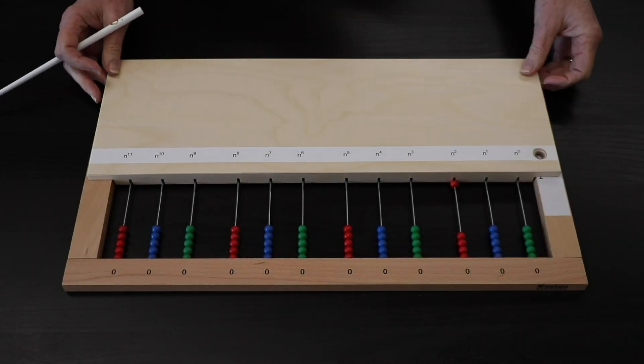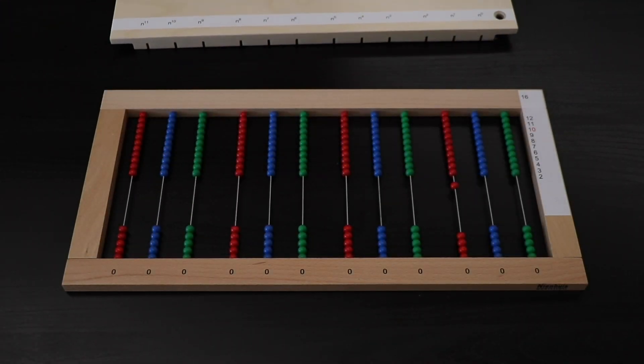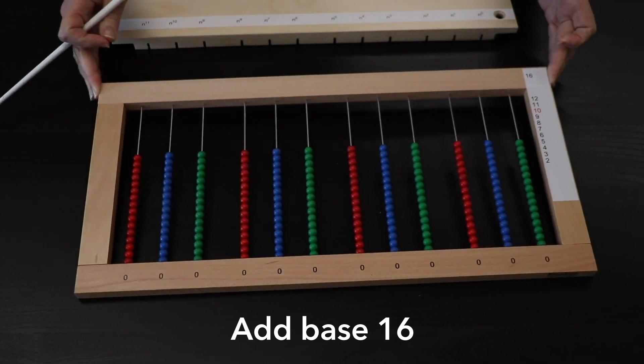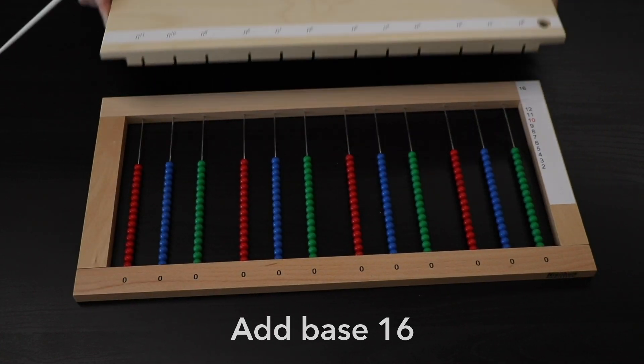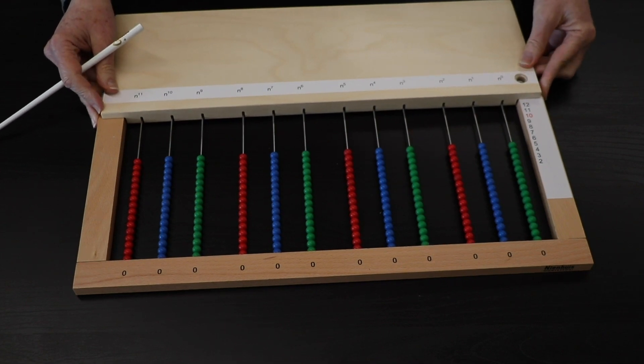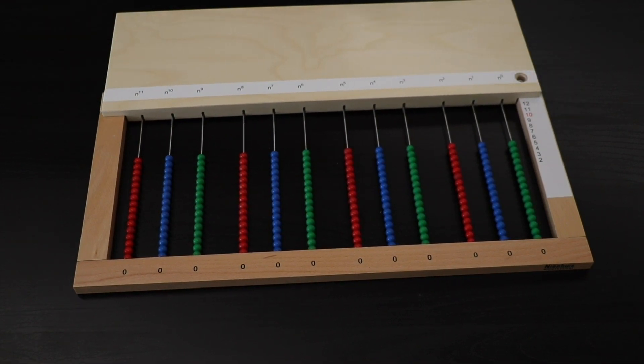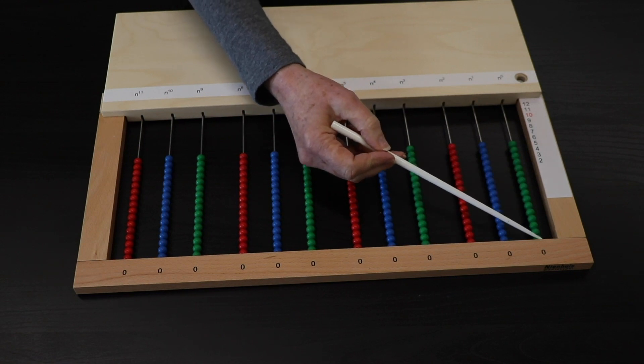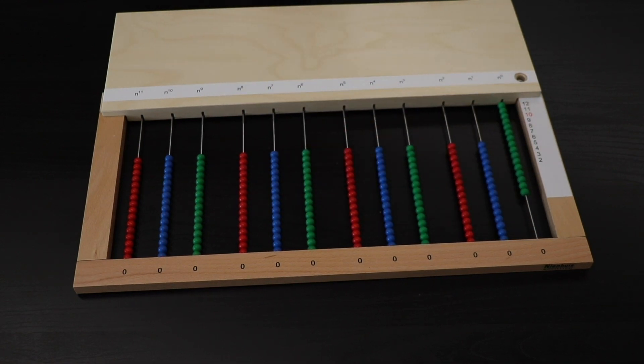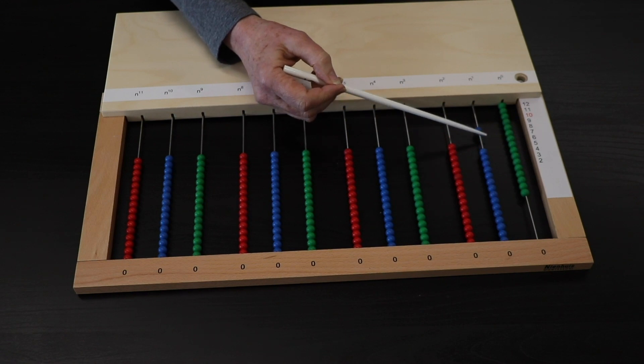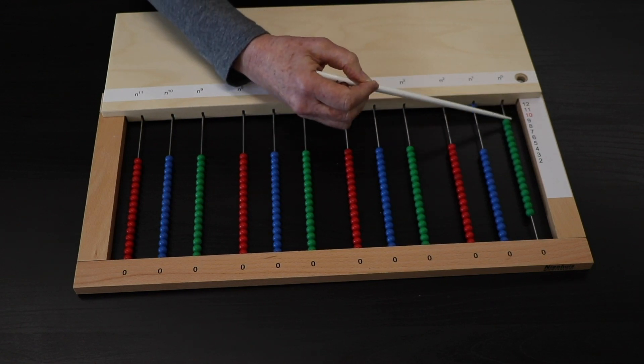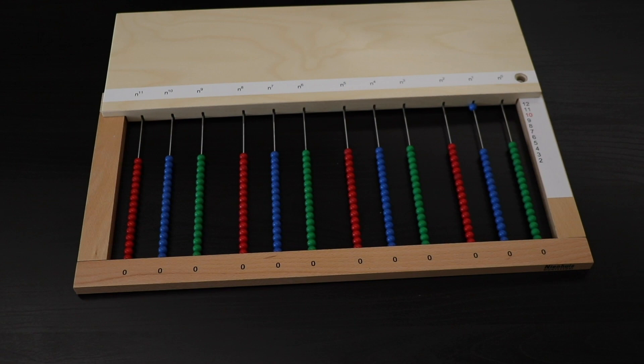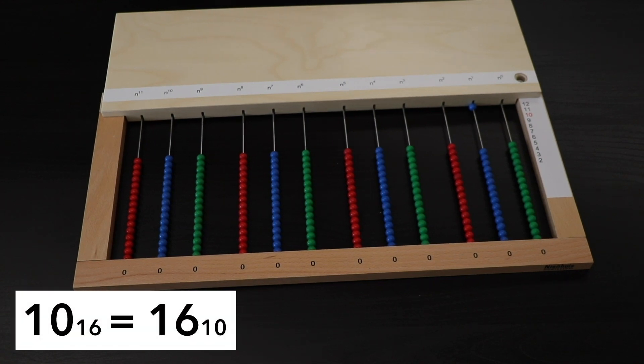Let's say we want to work in base 16. This represents base 16. So there will be 16, or a count of 16, before the child exchanges to the next hierarchy. This is 1, 0, base 16, which equals 16 in base 10.